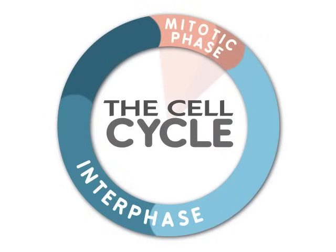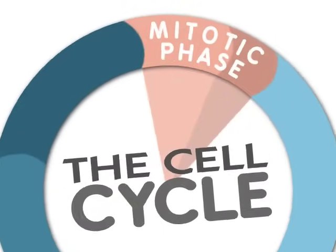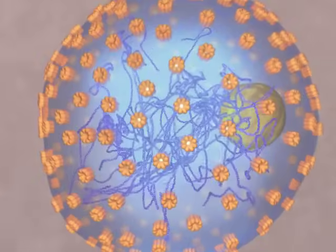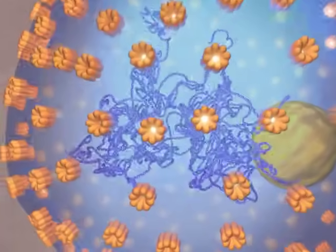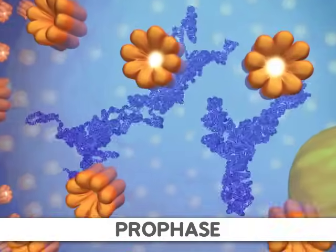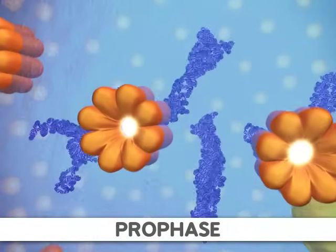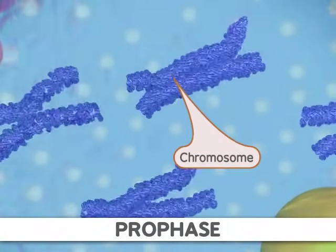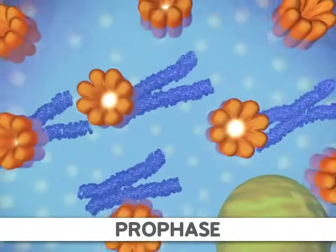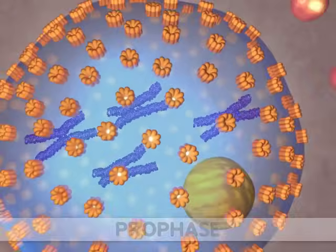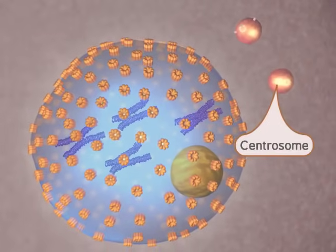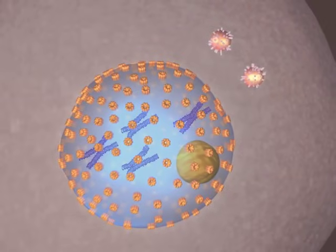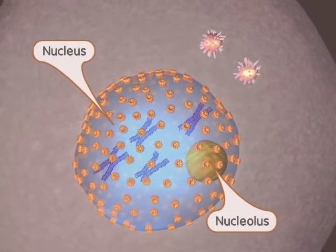For a typical eukaryotic cell, mitosis will last about 80 minutes. During the first stage of mitosis, called prophase, we first see the classic chromosome structure. This occurs through a condensation process. At the same time, protein strands called microtubules appear from the centrosomes in animals. Finally, a structure found within the nucleus, the nucleolus, disappears.